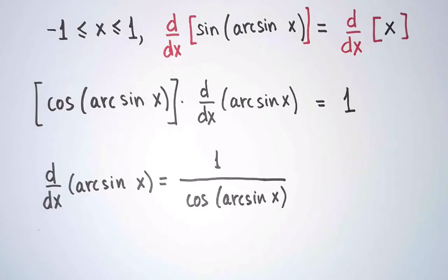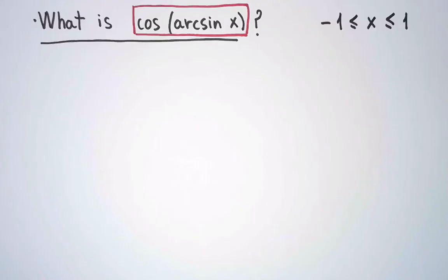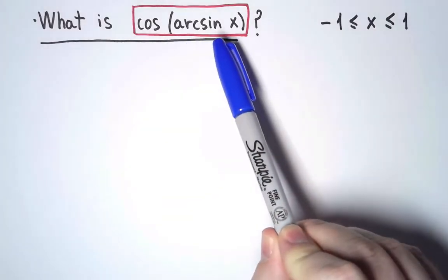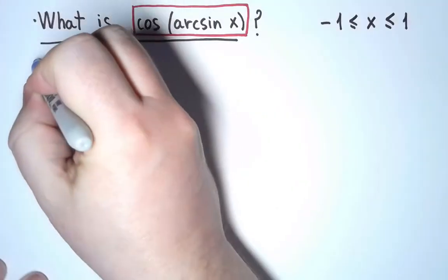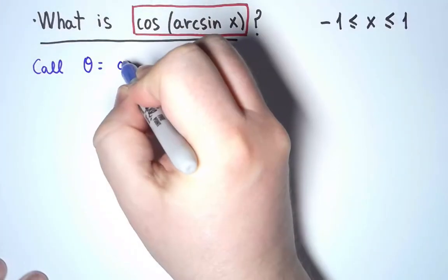I could perhaps leave it as is, but I can rewrite it in a nicer way. What is cosine of arcsine of x? For simplicity, so as not to write arcsine of x all the time, I will give it a name. I will call it θ.